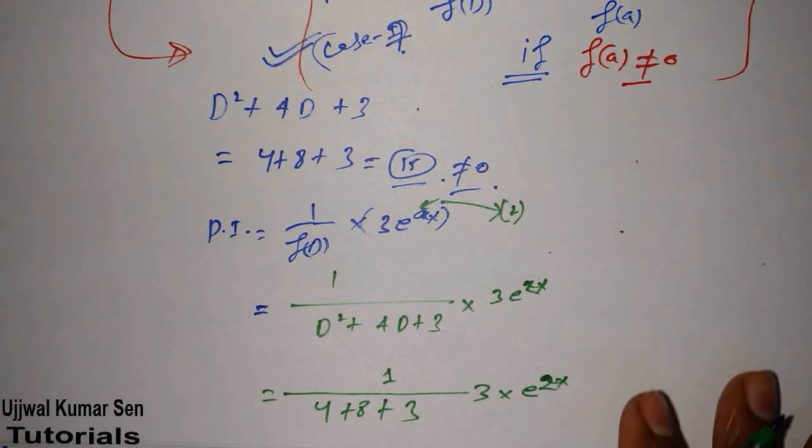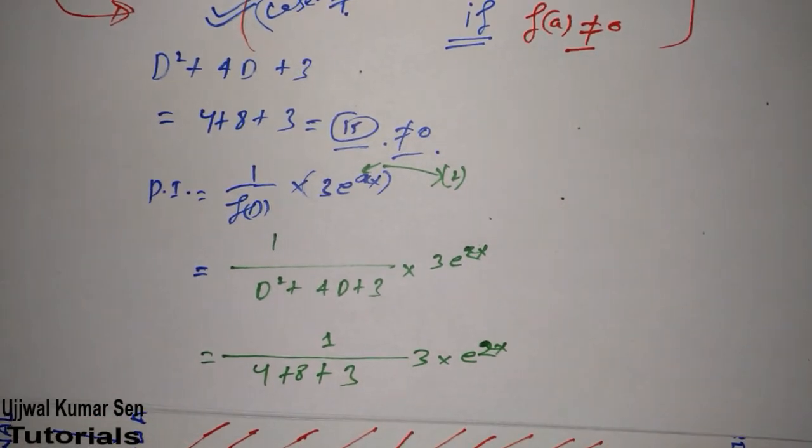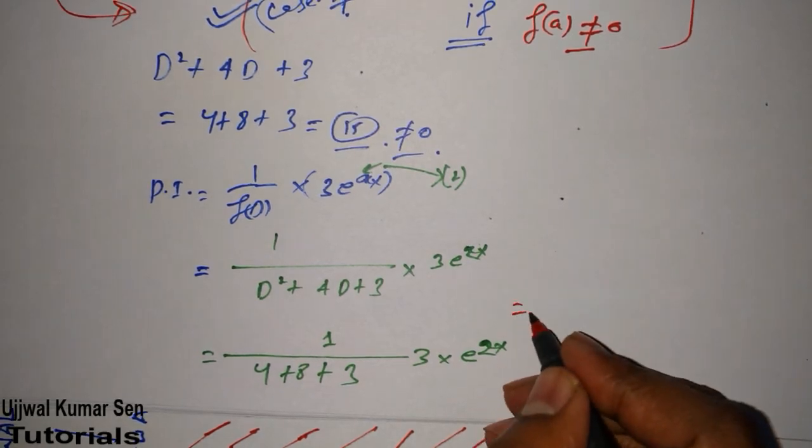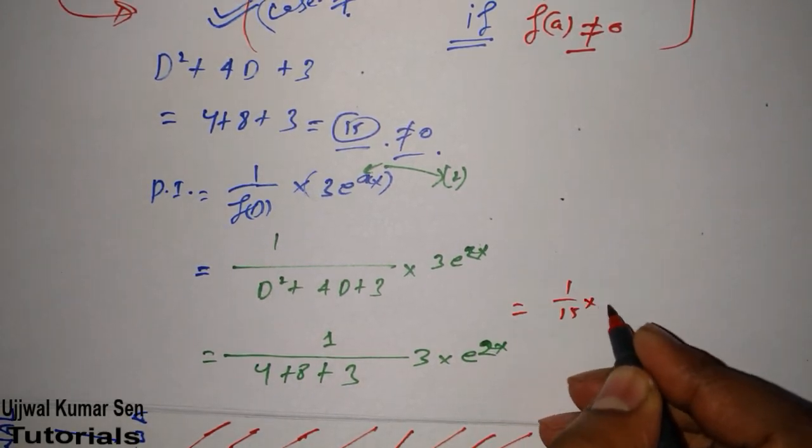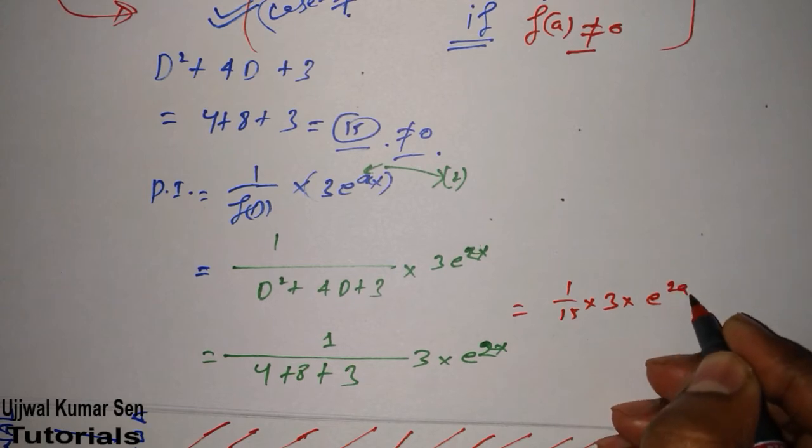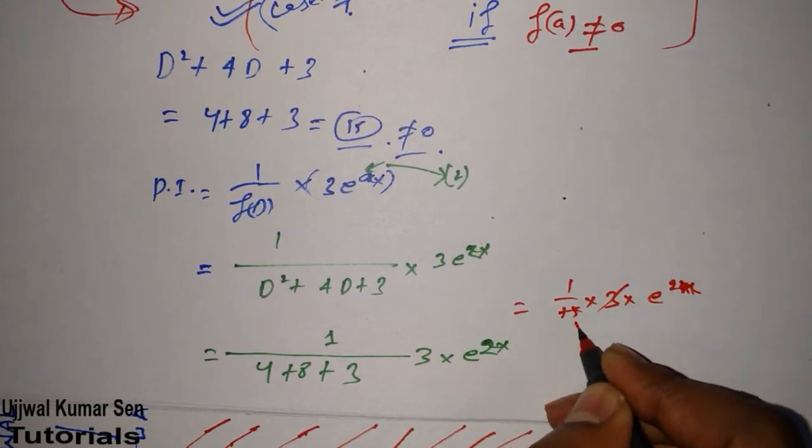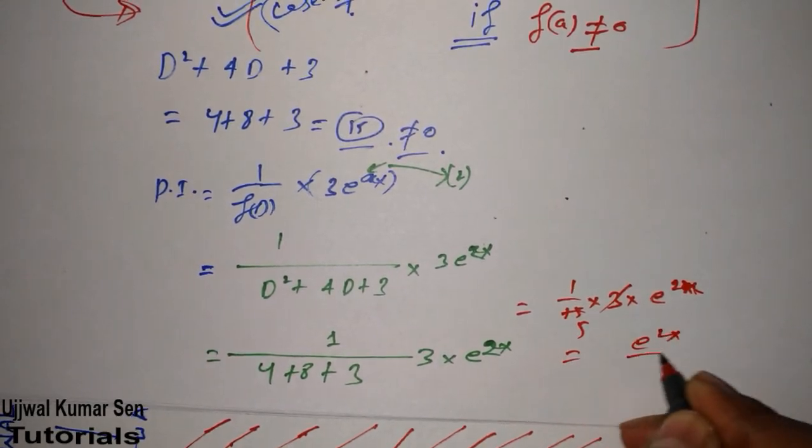Therefore 4 plus 8 plus 3, 1, 3 multiple e to the power 2x. And this 3 is constant, so there is no concern we have with 3. Let's solve this: 1 by 15 multiple 3 e to the power 2x, 3/5, so e to the power 2x by 5.